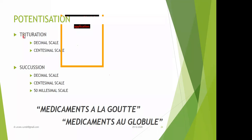The trituration process is a one-hour process where we use mortar and pestle, and sugar of milk is the vehicle commonly used. For the one-hour process, it is divided into 3 parts, where the vehicle is added as 3 equal parts. As per Hahnemann, whether it is 1:9 or 1:99, the vehicle is divided into 3 equal parts — that is 33, 33, 33.